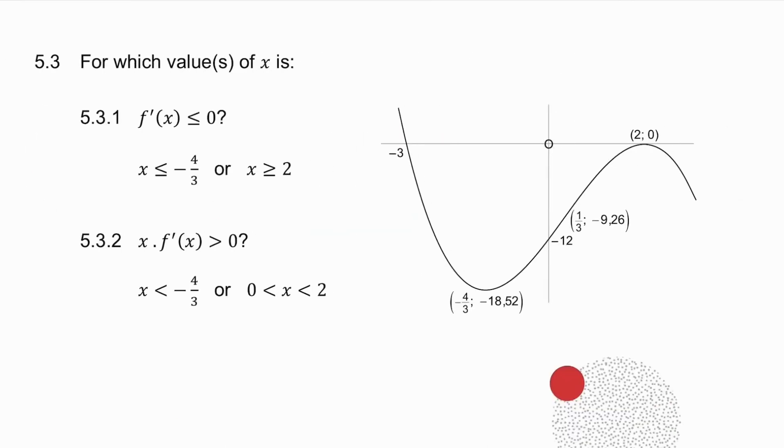In 5.3.1, I ask you where the derivative is less than or equal to 0. Now, the derivative is the gradient. So where is the gradient less than or equal to 0? Well, when the graph is decreasing. So where on this graph is it decreasing, it's there, and it's there. So what are these values of x over here? It's when x is less than minus 4 over 3, but at minus 4 over 3, the derivative is 0. And they asked you where is the derivative less than or equal to 0, so it's when x is less than or equal to minus 4 over 3.